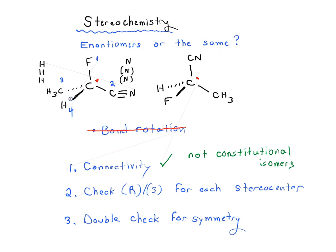Okay, so now we've got our priorities. We're going to go from one to - remember how this works. Ordinarily for R and S we want to make sure number four is in the back, but there's another little shortcut called the single swap rule that'll help us figure this out even if number four is pointing out of the page.